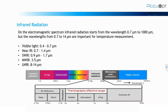So this is the electromagnetic spectrum. Our infrared radiation covers a limited area of the electromagnetic spectrum. You can see that it starts from 0.7 micron to 1000 micron, but the wavelength from 0.7 to 14 micron are important for thermal cameras to measure the temperature.